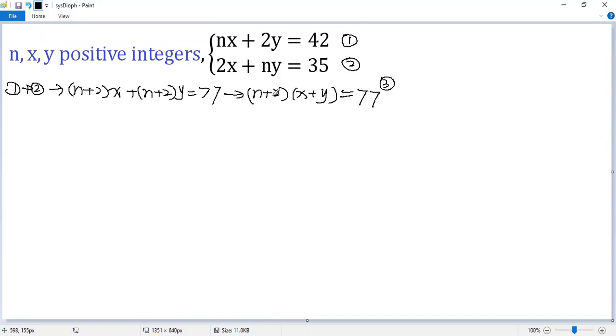From this one, we know n plus 2 is a factor of 77. So I'll say n plus 2 divides 77. So the possible values for n plus 2 would be n plus 2 equals 1, 7, 11, or 77.